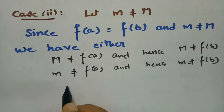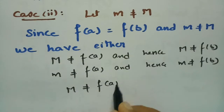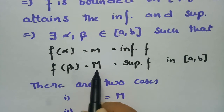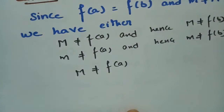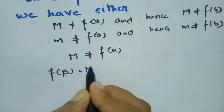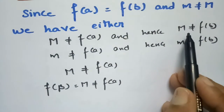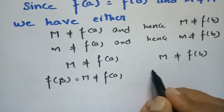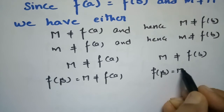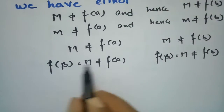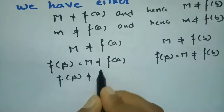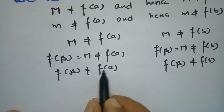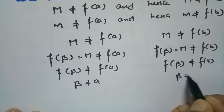Taking the condition that capital M is not equal to f(a): capital M is the supremum value, and f(β) = M. So f(β) is not equal to f(a), and likewise f(β) is not equal to f(b). Since f(β) ≠ f(a) and f(β) ≠ f(b), we conclude that β ≠ a and β ≠ b.